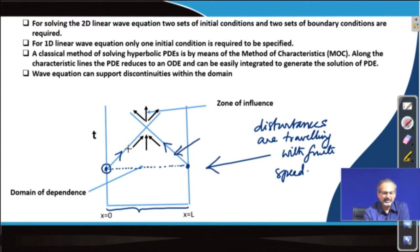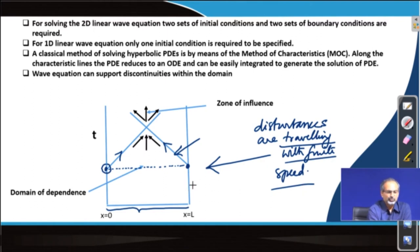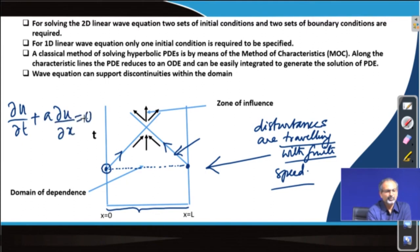The moment the characteristics get slanted with respect to the x-axis means there is elapsed a finite amount of time before the disturbances can make their way into the domain, which means the disturbances are travelling with finite speed. This is one of the characteristics of hyperbolic partial differential equations. When we were dealing with the linear wave equation we said that the disturbances are propagating with speed a through the domain and the characteristic was carrying this information.